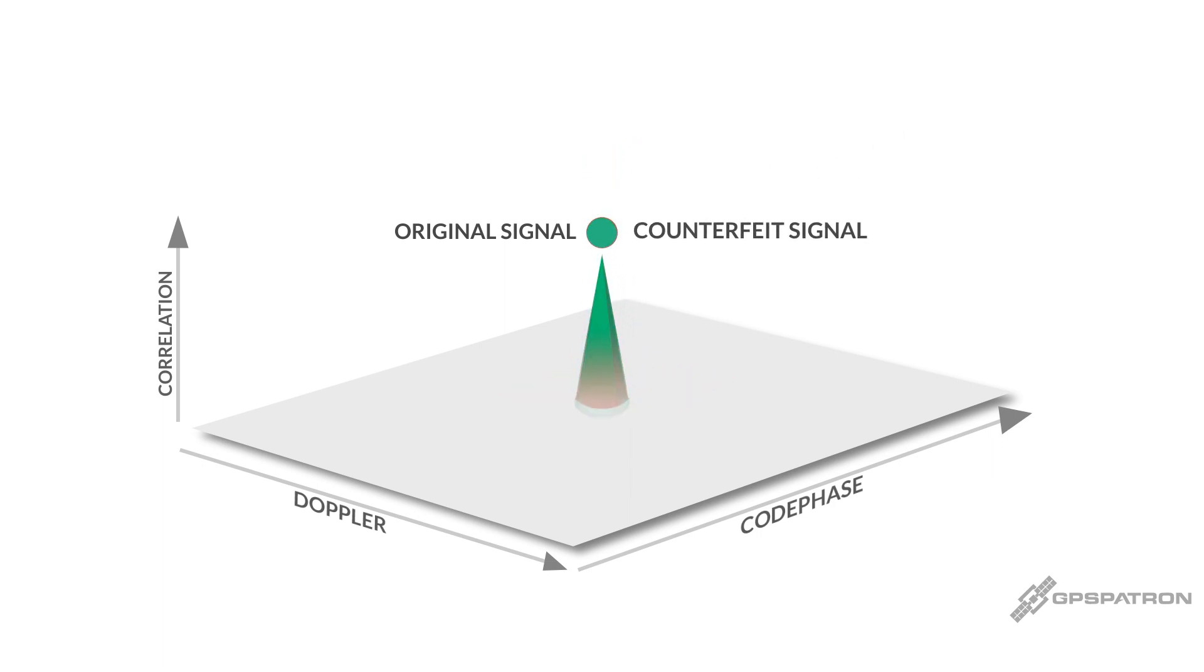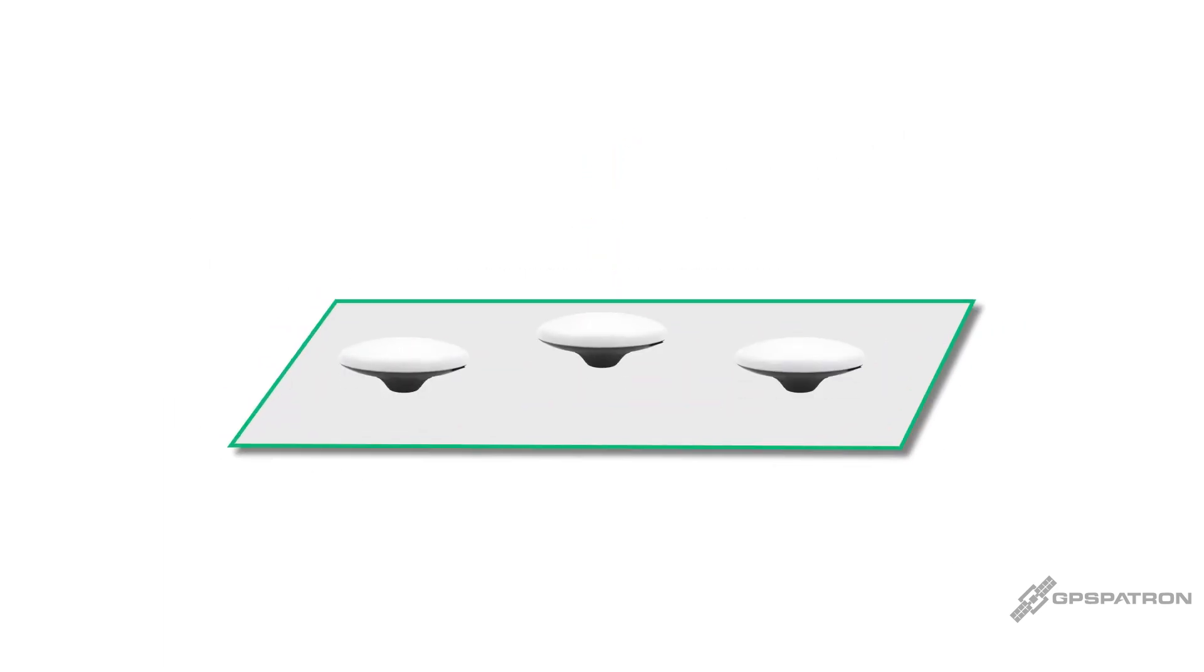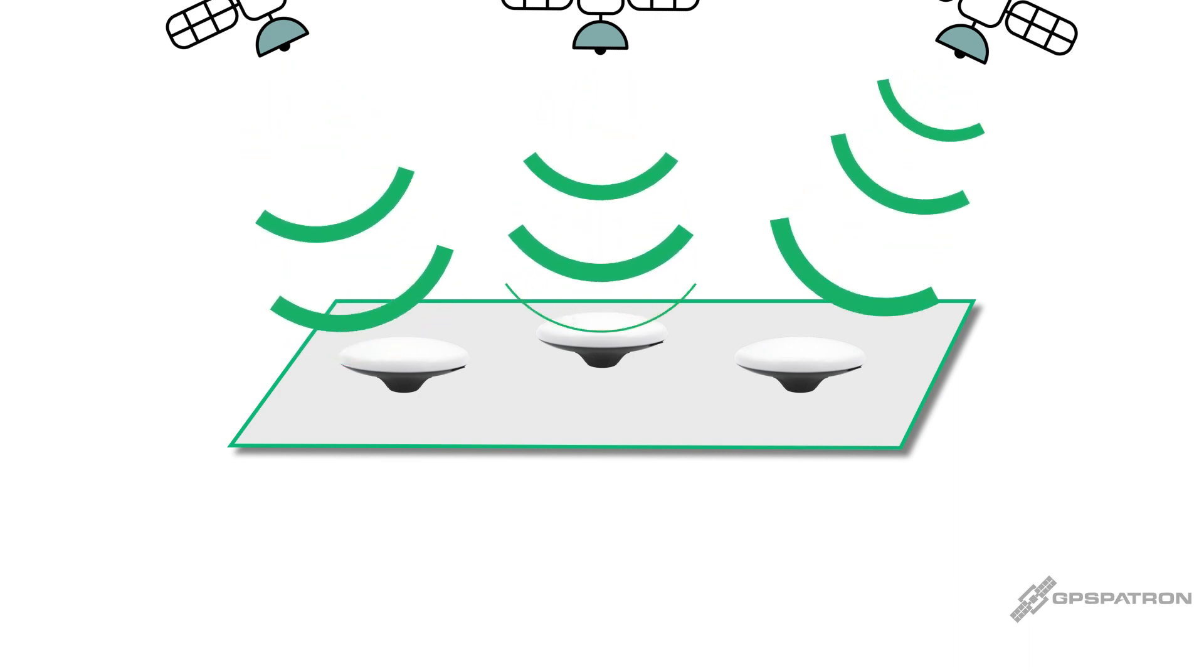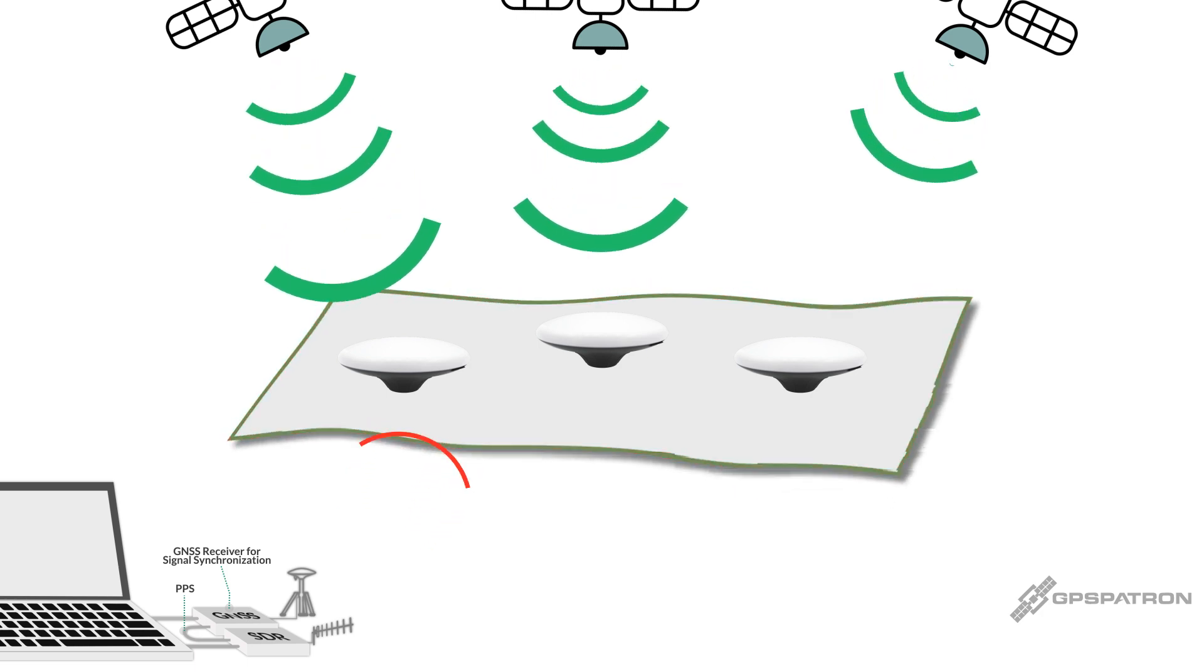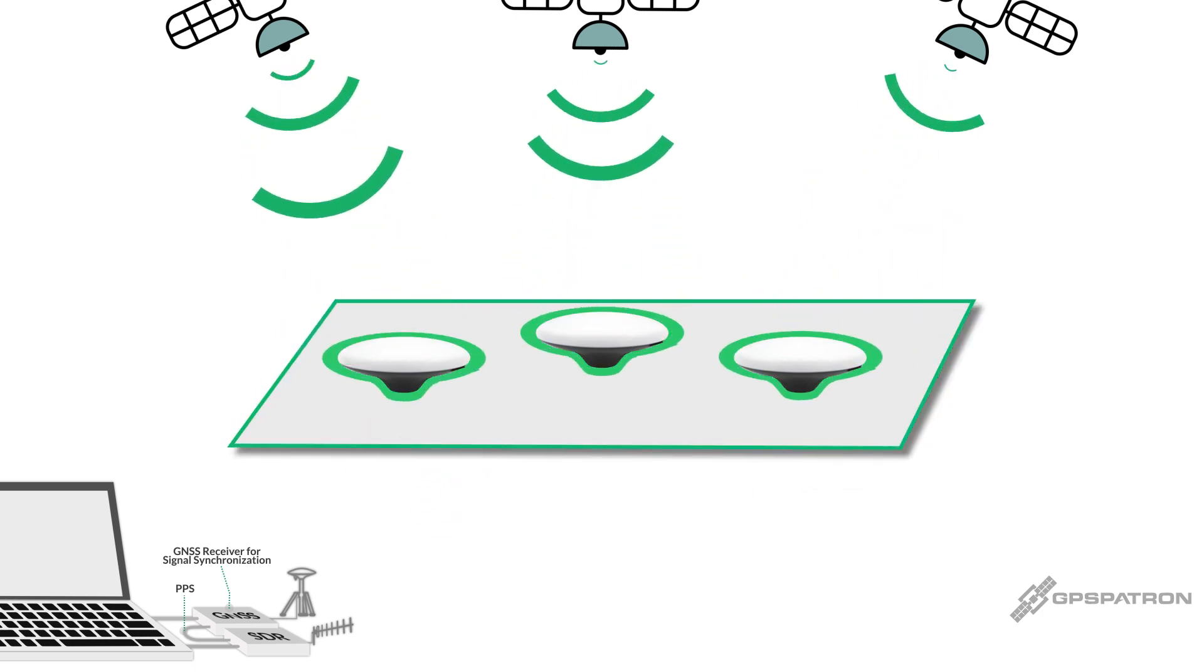This is only one way to detect such an attack, and this by recognizing a distortion of the navigation field or by estimating the angle of arrival of the radio signals. This requires the use of multiple spaced GNSS antennas.